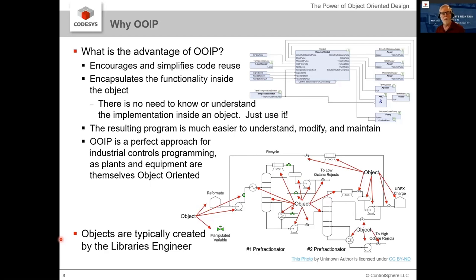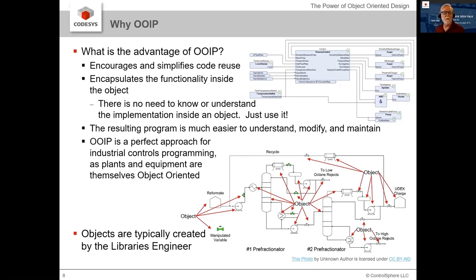Where does it make sense to use object-oriented industrial programming? It basically makes sense any time you're using multiple things. If you were writing a PLC program that only ever ran one pump, it might not make sense. But anywhere you use multiple motors, multiple valves, multiple actuators, multiple displays — then it starts to make sense. So I would say it makes sense most of the time.